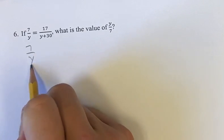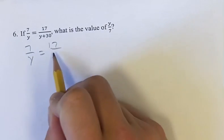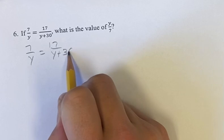So just rewriting this right here, if 7 over y is equal to 17 over y plus 30.